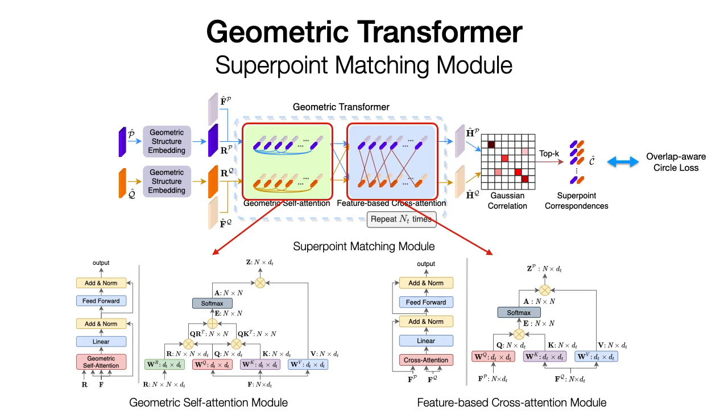At last, we select the superpoint correspondences by global top-k searching. The superpoint matching is supervised by an overlap-aware circle loss. Please refer to our paper for details.